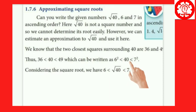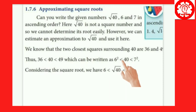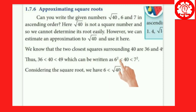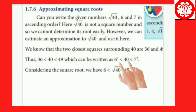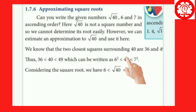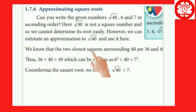For example, we can find out the approximation — the root value could be something like 6.2, 6.3, or 6.27. We can find out the root value more precisely. We can find out the approximation and the root value between 6 and 7.